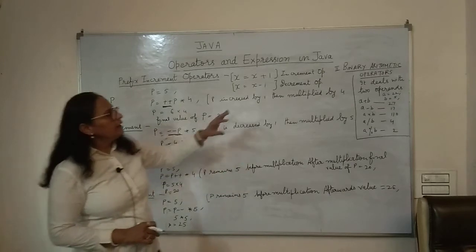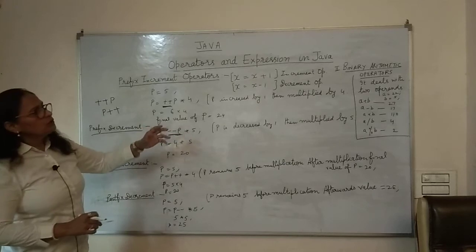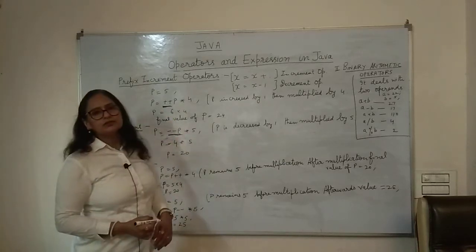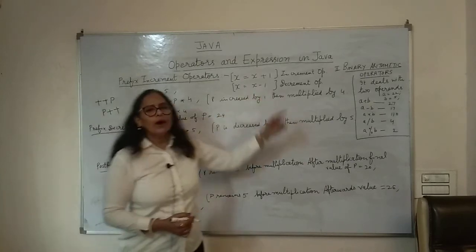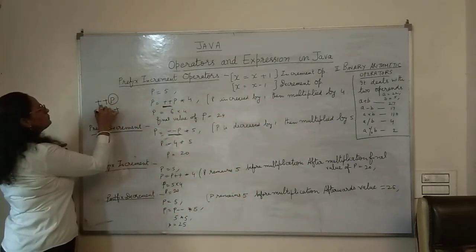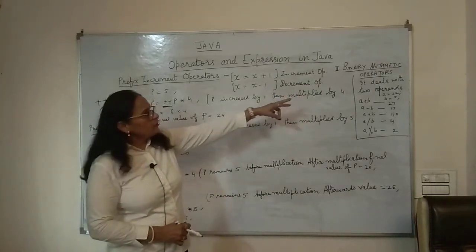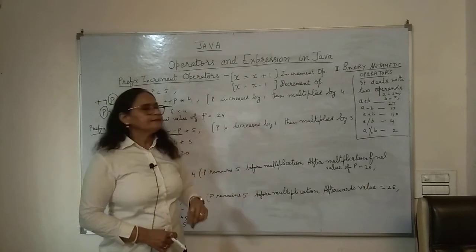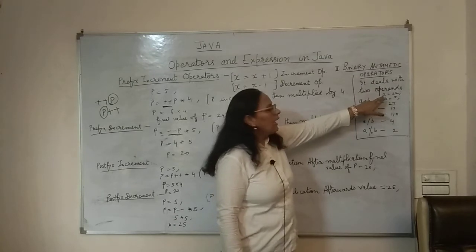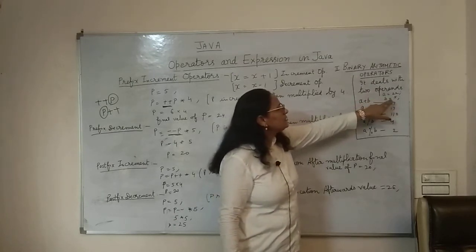So far we have covered unary arithmetic operators, where there is only one operand, such as P. Now let's revise binary arithmetic operators, which deal with two operands. For example, A = 22 and B = 5.